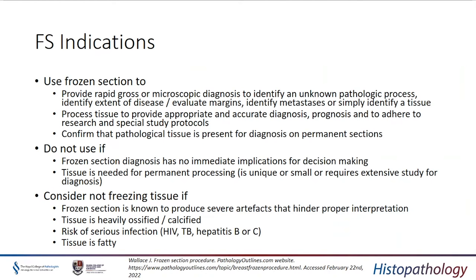The indications for a frozen section are to provide rapid gross or microscopic diagnosis to allow accurate diagnosis of a pathological process, to look at margins, identify metastases, or just identify tissue. It must adhere to a specific protocol. If the surgeon is going to get an answer which he then ignores or does not act on, then there is no point doing the test. It also allows tissue to be taken for research and special study protocols, and a tissue bank can be developed on the basis of tissue taken at frozen section.